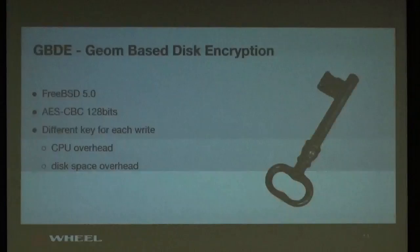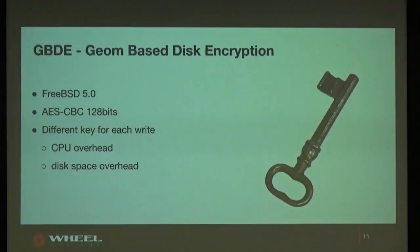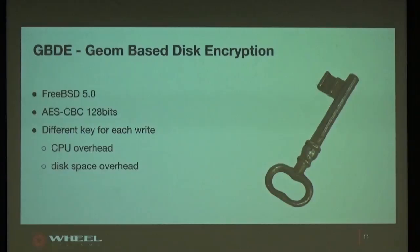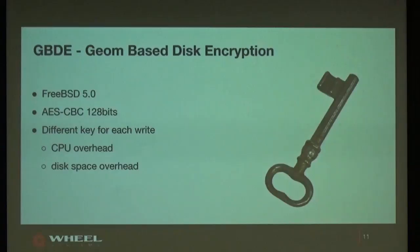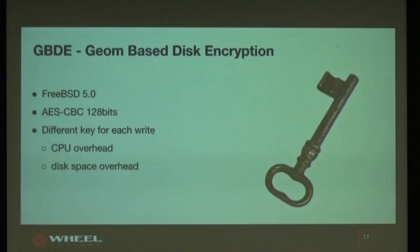GDD is the older one — we've had it since FreeBSD 5.0. It supports only one encryption method: AES with CBC and only one key type. It also has two overheads: for every write we use a different key for the disk, and we need to save this key on disk, so every block saved also needs to save a key. There is also CPU overhead because we need to generate all those keys. In the FreeBSD project, we don't develop many new features for GPD — it's a little bit outdated.